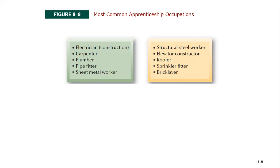Other apprenticeship types include structural steel workers, elevator constructors, roofers, sprinkler installers — you've seen different sprinkler systems used in gardens — and bricklayers. There are many different trades covered by apprenticeship programs depending on the nature of the organization.